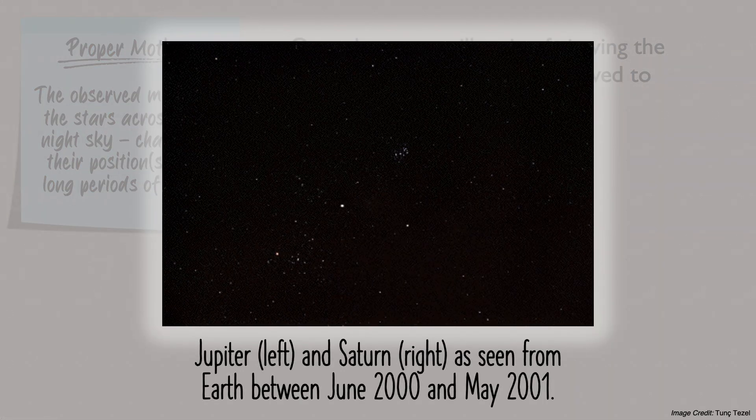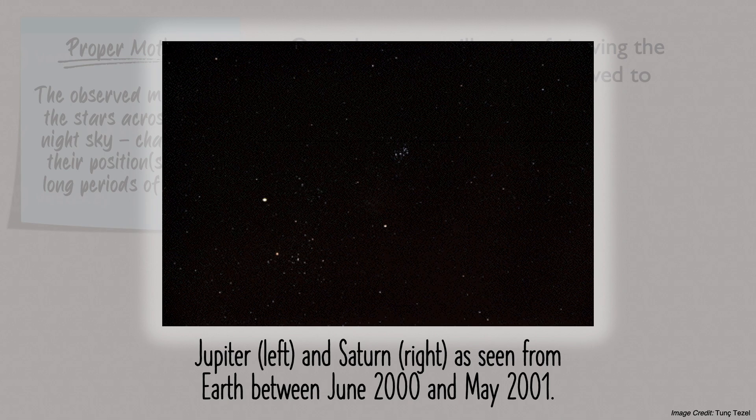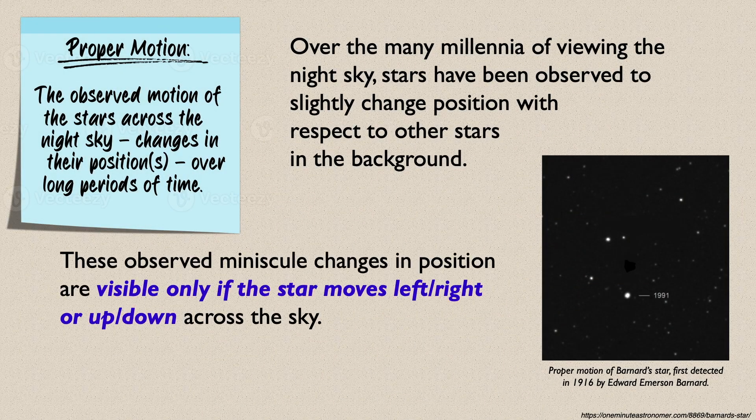Unlike planetary motion, which shows the planet's position changing drastically across the sky from night to night, the proper motion of the stars shows minuscule changes in their positions, and it could only be observed if the star is moving left or right, or up or down across the sky.